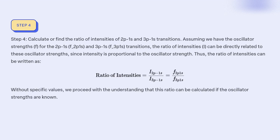Step 4: Calculate or find the ratio of intensities of the 2p→1s and 3p→1s transitions. Assuming we have the oscillator strengths f for the 2p→1s (f_2p) and 3p→1s (f_3p) transitions, the ratio of intensities can be directly related to these oscillator strengths, since intensity is proportional to the oscillator strength. Thus, the ratio of intensities is: I(2p→1s) / I(3p→1s) = f_2p / f_3p. Without specific values, we proceed with the understanding that this ratio can be calculated if the oscillator strengths are known.